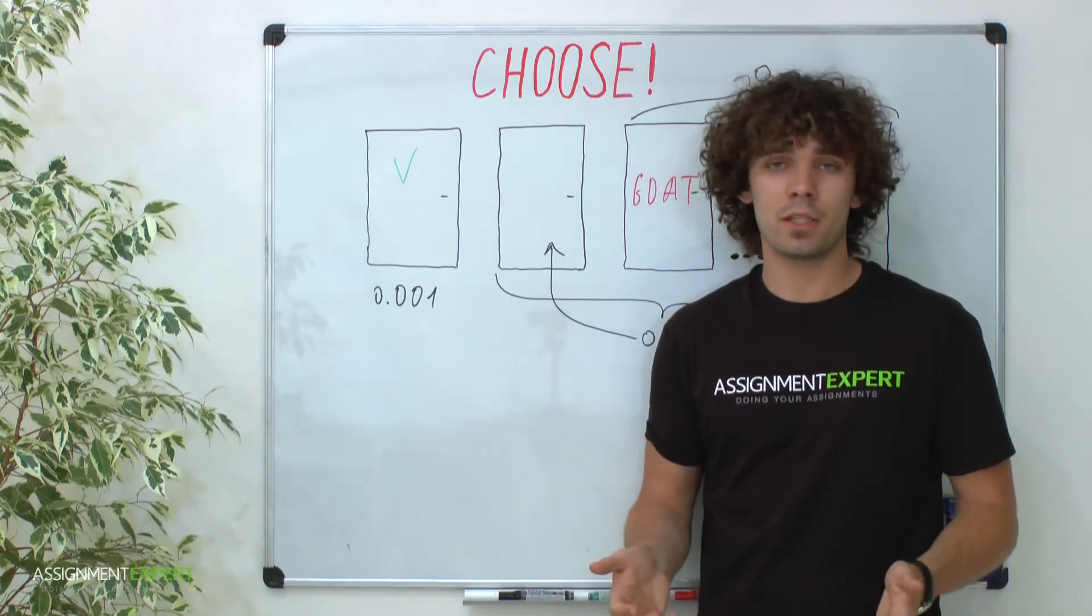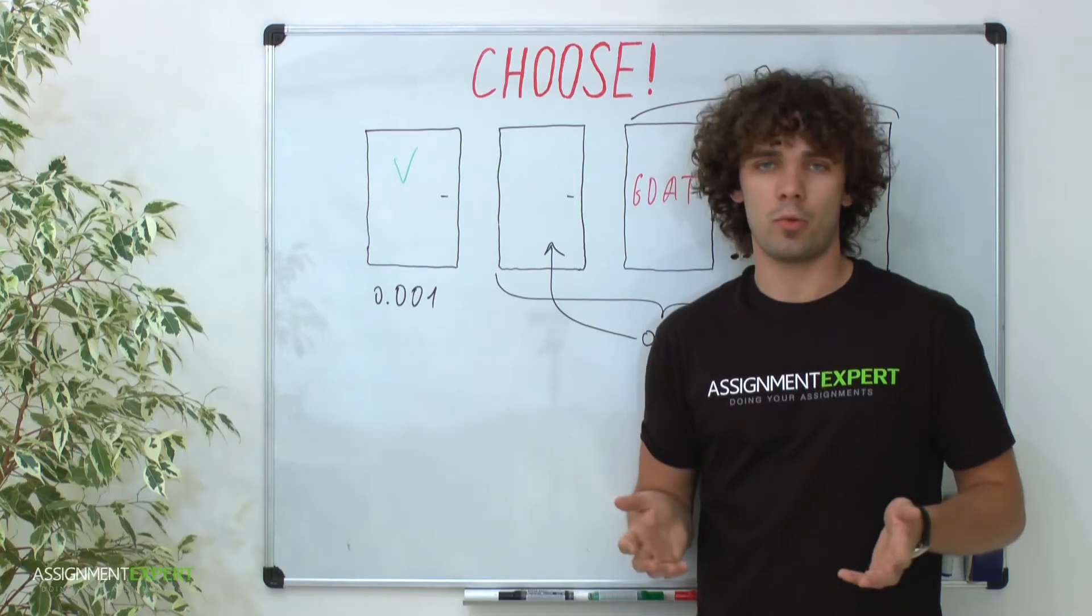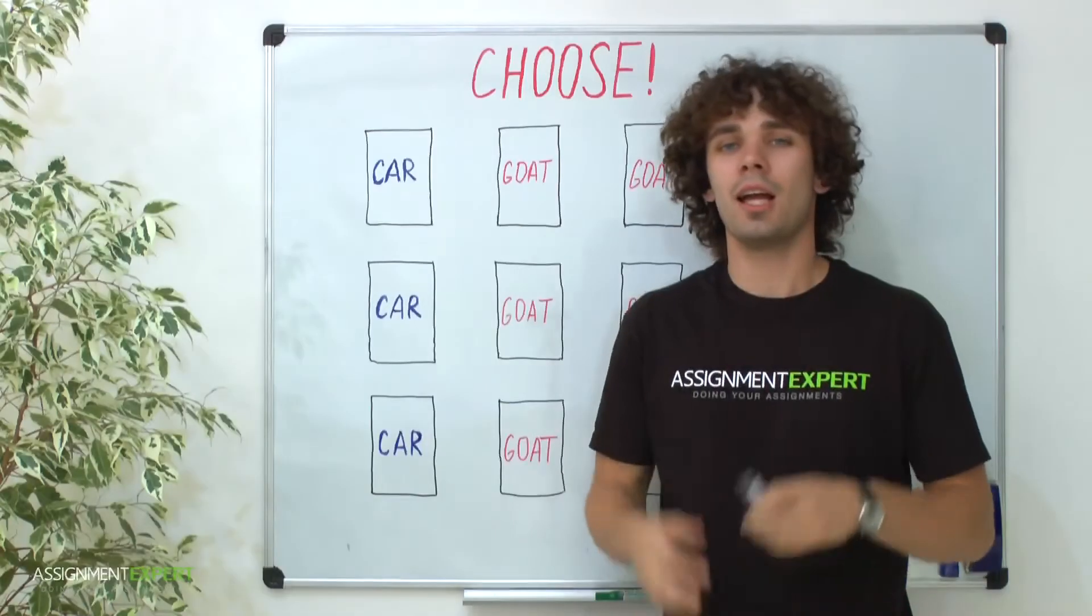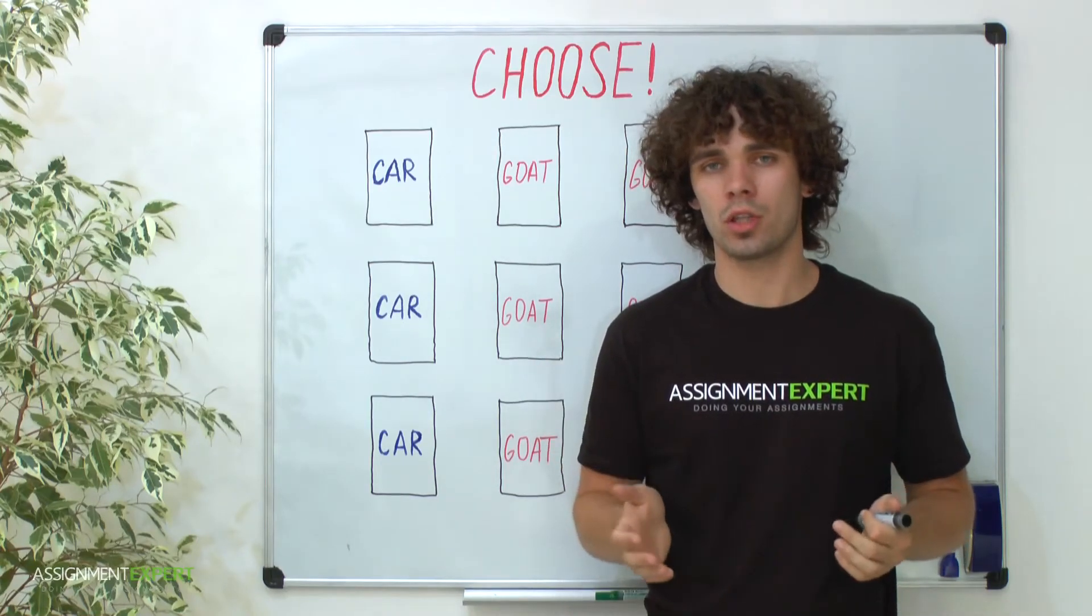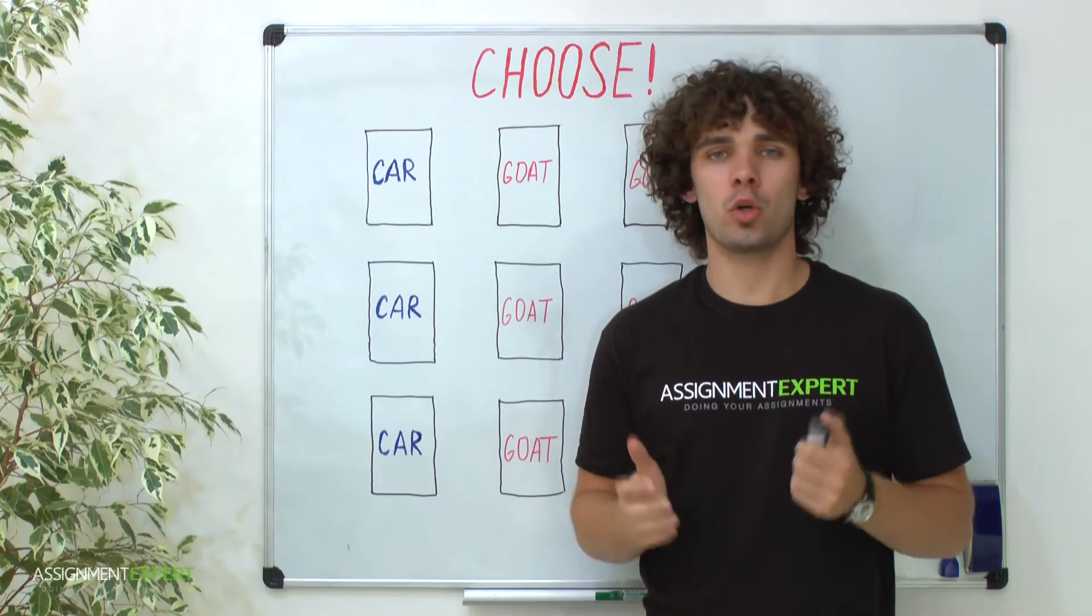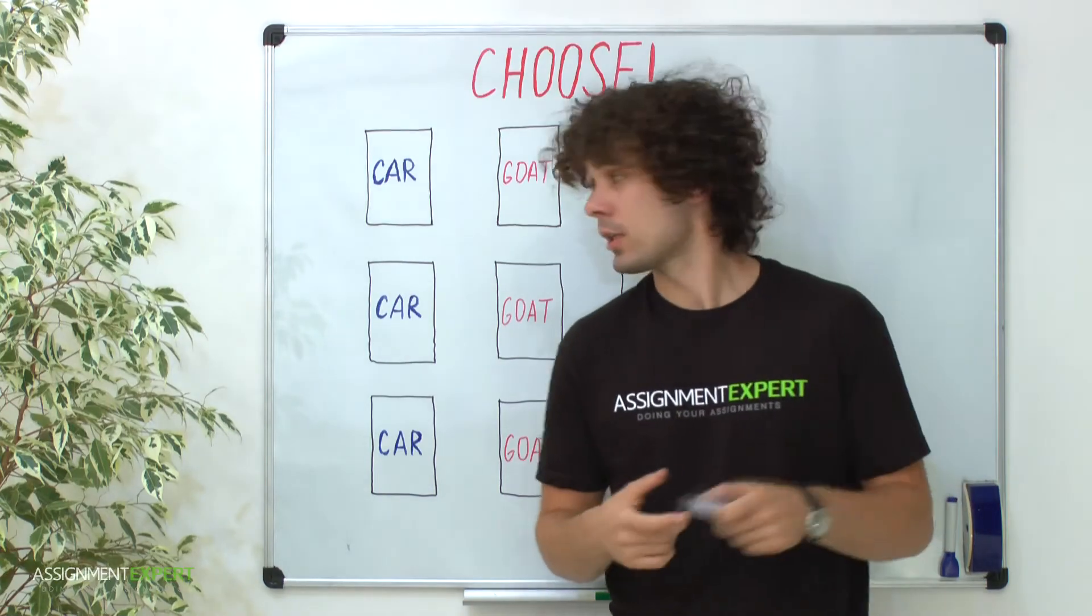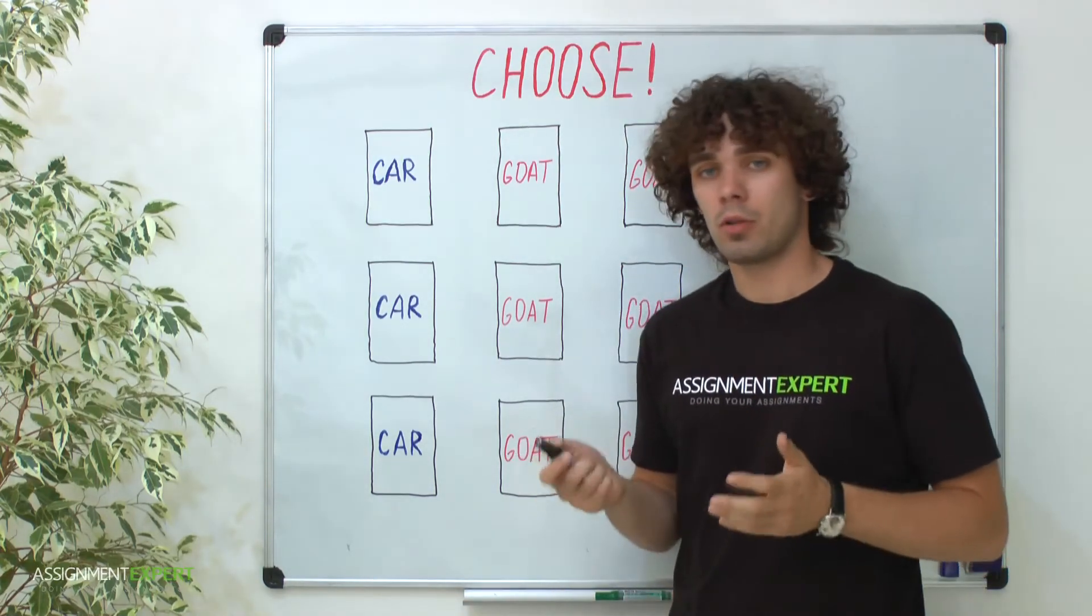Okay, not convinced? Let's look at the problem another way. As we know, we have a car, goat one, and goat two, behind three doors. You choose a door, and then I show you where one of the goats is. Now let's consider all the possible cases.